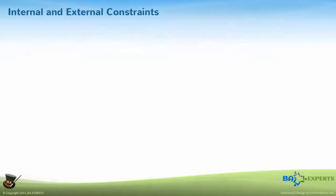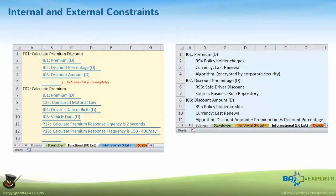For any given functional or informational component, you need to identify all applicable laws and regulations that define what a function must do, what it must not do, or that place restrictions on the informational component — those are external constraints. In addition, you need to look at business rules, policies, and procedures that might affect the function or data. Make sure that you document these constraints and reference them in all impacted functional and informational requirements.